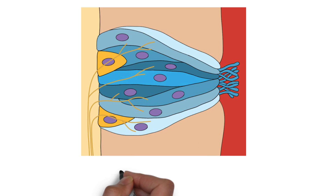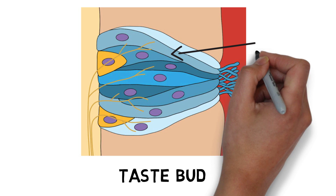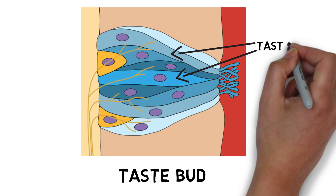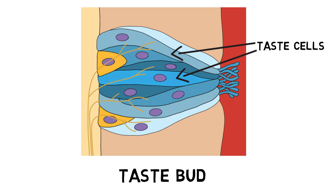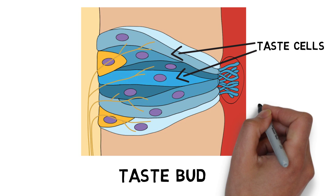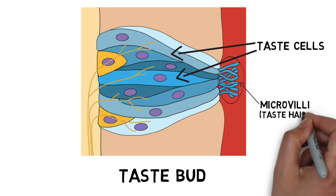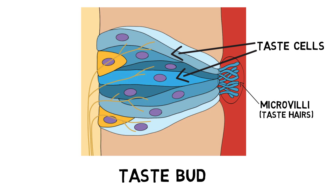Each taste bud contains anywhere from 50 to 150 taste receptor cells. Extending from these cells are fine microvilli, sometimes called taste hairs or gustatory hairs, which protrude through an opening called the taste pore into the mouth. These microvilli come in contact with substances in the mouth that can be tasted, also known as tastants.